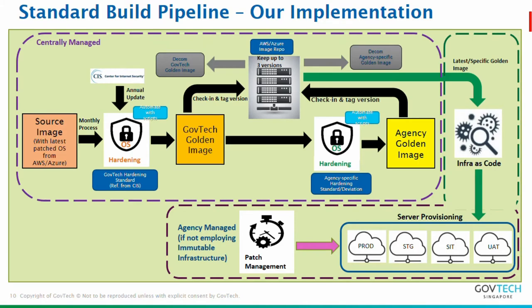This is how we do our standard golden image. We have a source image and some processes — we do the hardening to get a GovTech golden image. Once we harden it, some agencies may say the hardening is too tight or too loose — they can tag it, check it in, and further tweak their own hardening to their required standard. As they provision servers, patching can also come in if they're not using immutable infrastructure. We have some agencies still not using full immutable infrastructure.